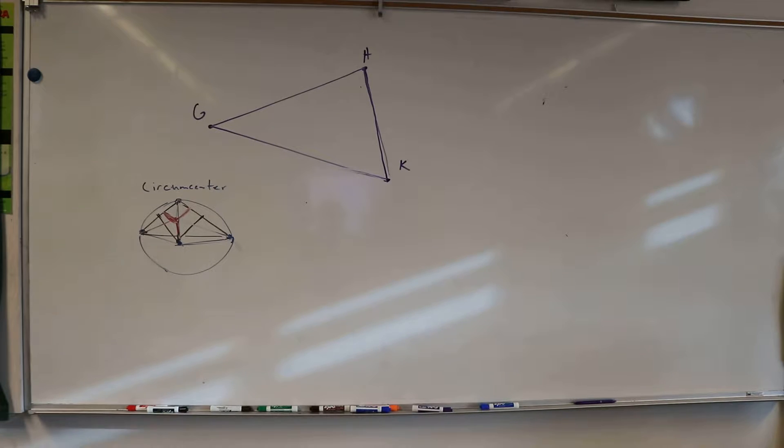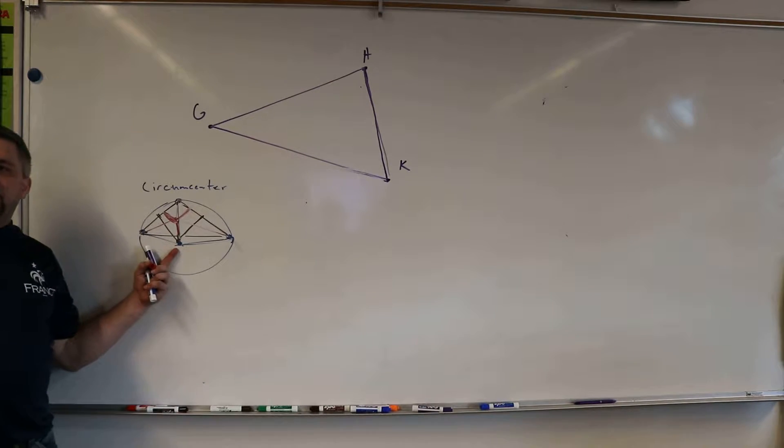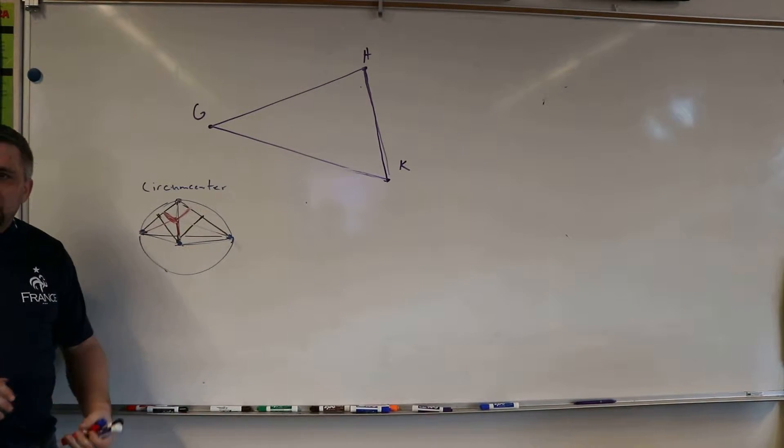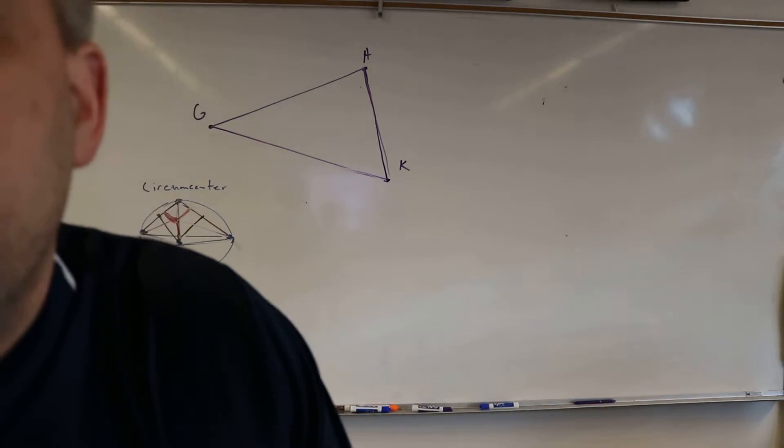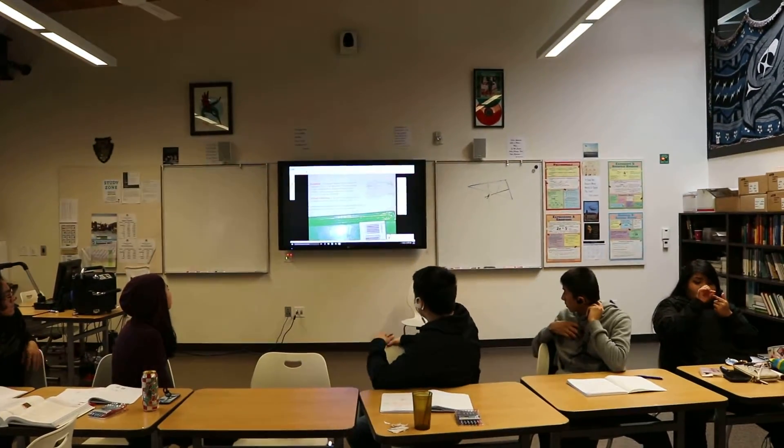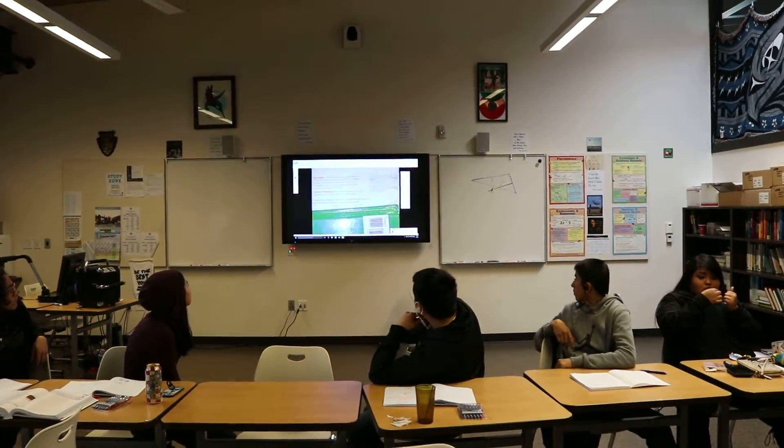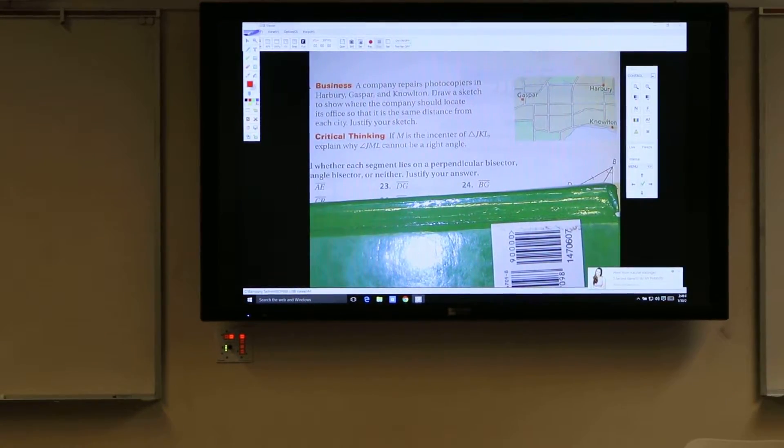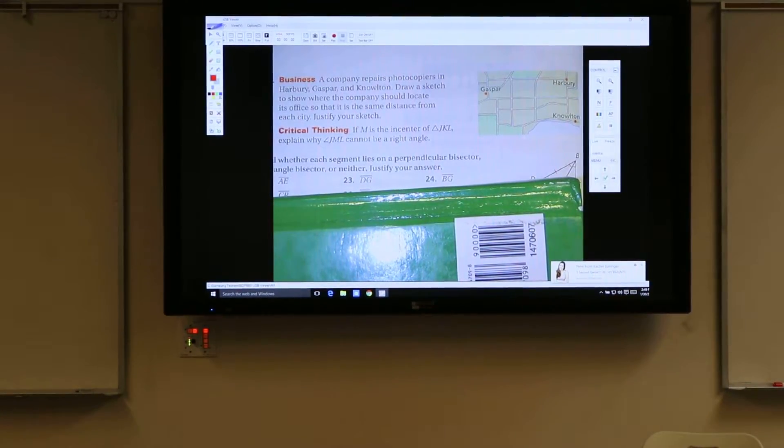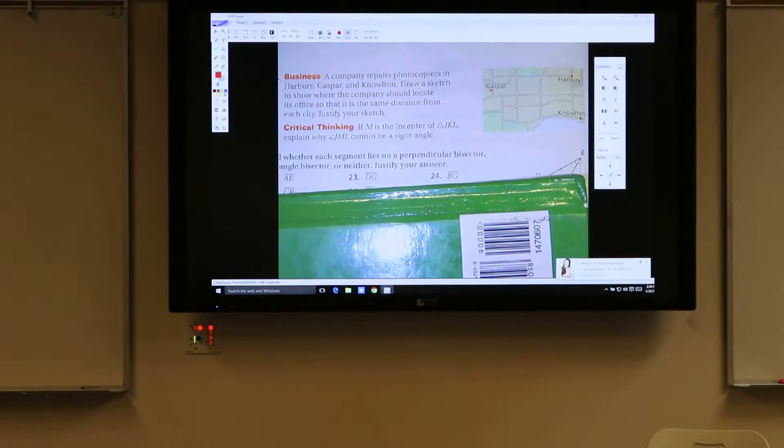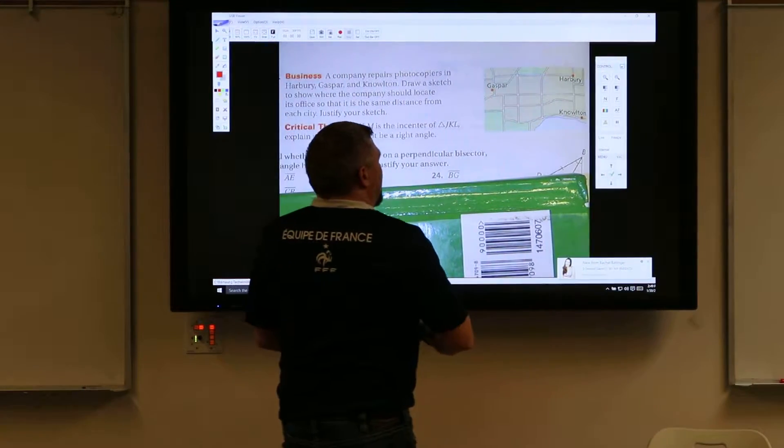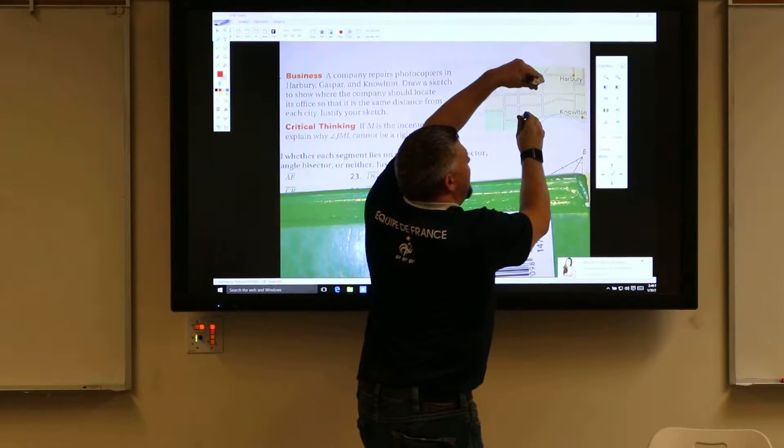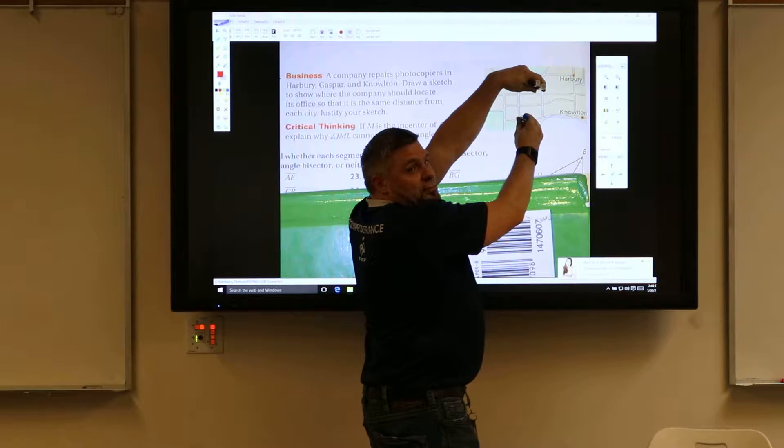But why would the incenter maybe be a better idea than the circumcenter, which is the same distance? Why would you think? So, let's take a, let's take another look over here. Okay? Try to get a zoom in. I'm going to jump it up, so I can get a little bit better. Zoom. Let's talk about this. Now, that circle center is going to be somewhere around here. That incenter is going to be somewhere around here. Does that make sense?